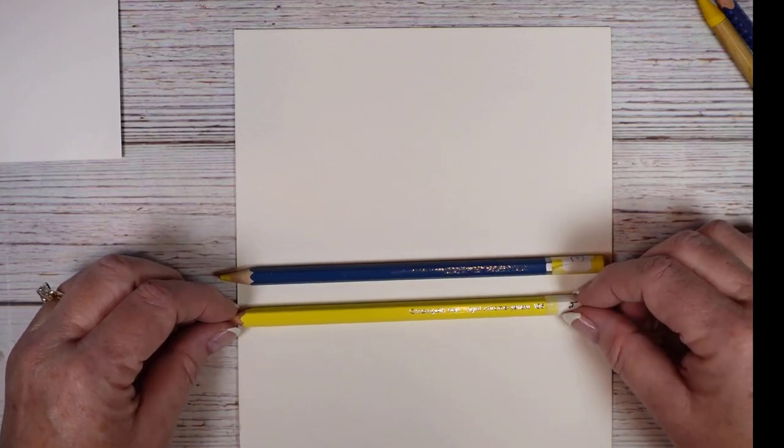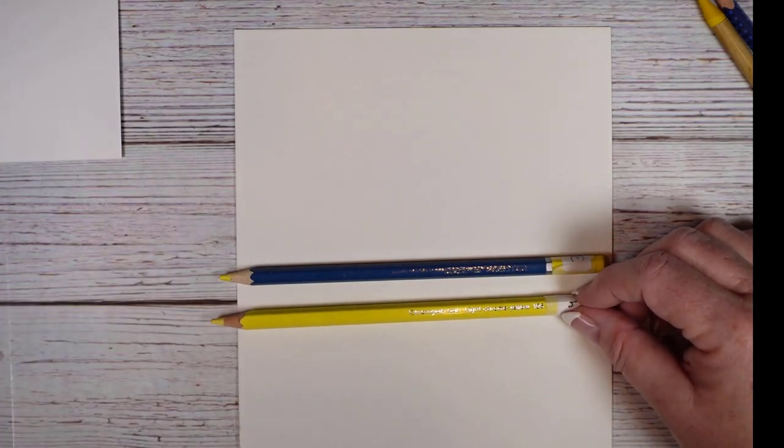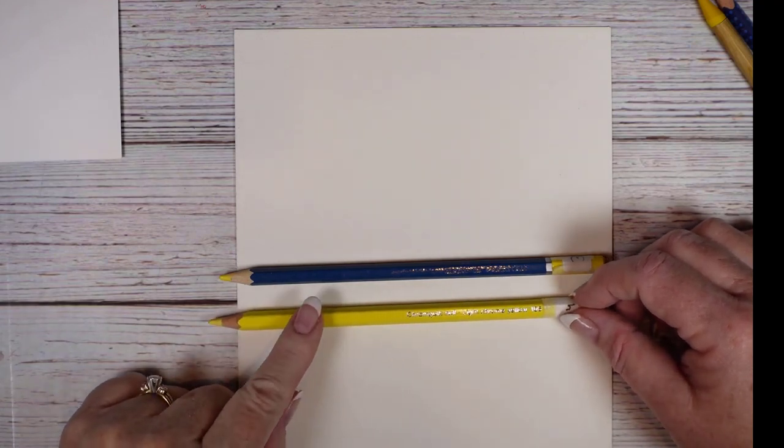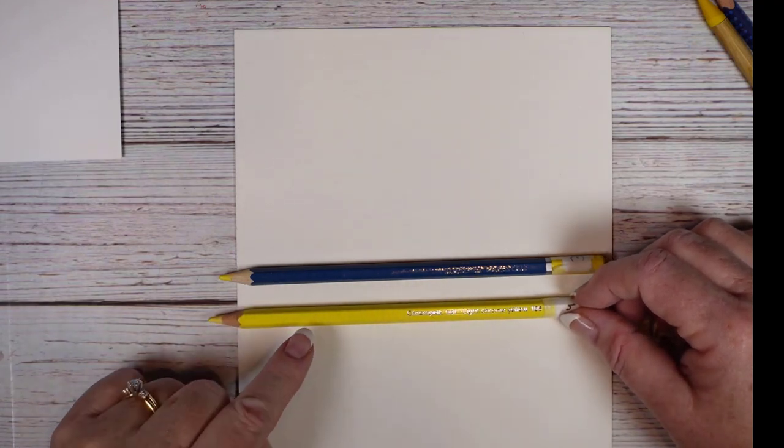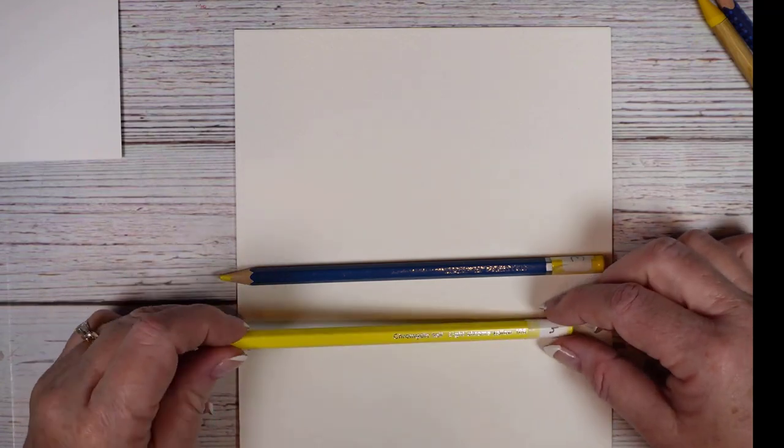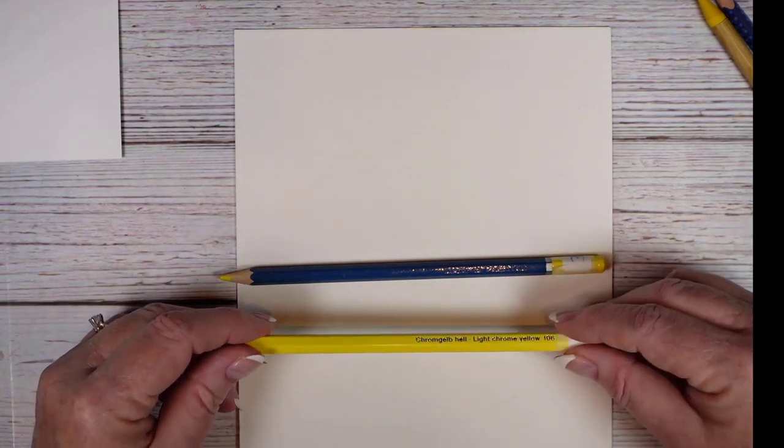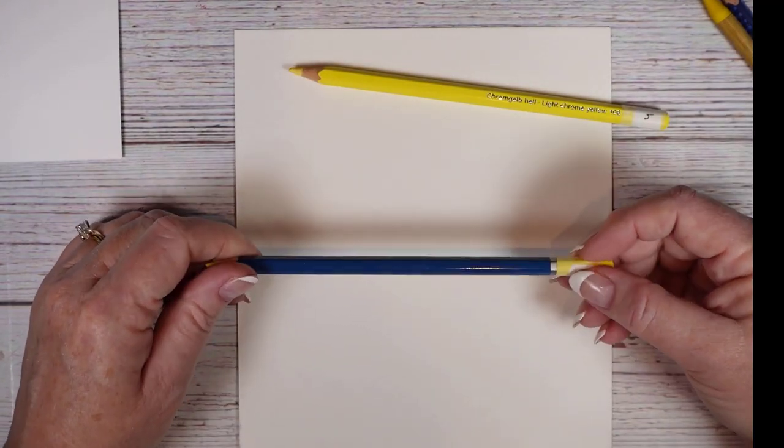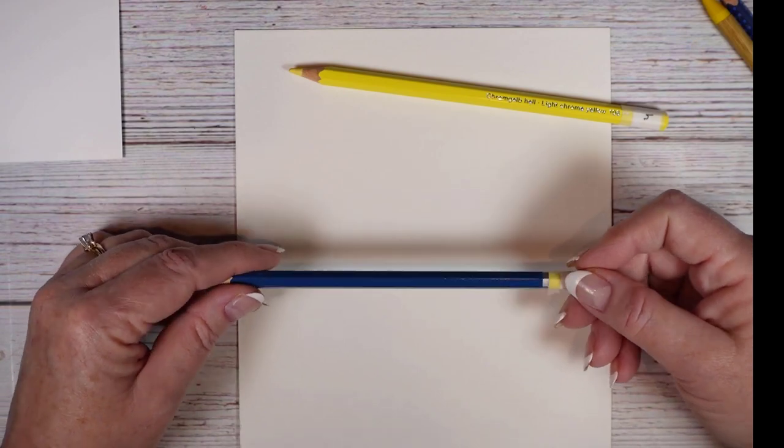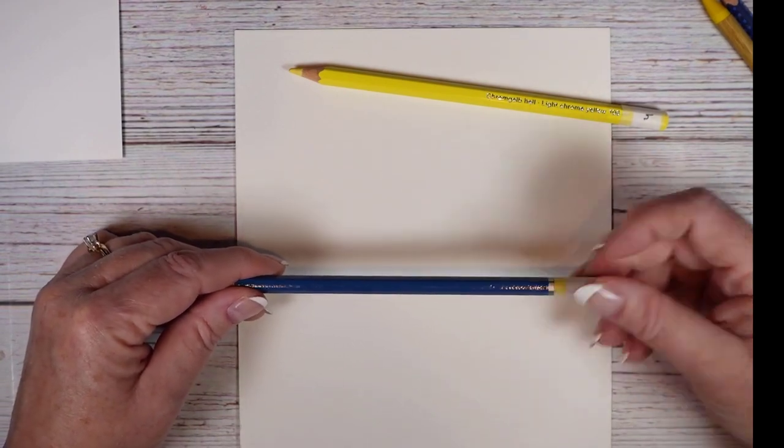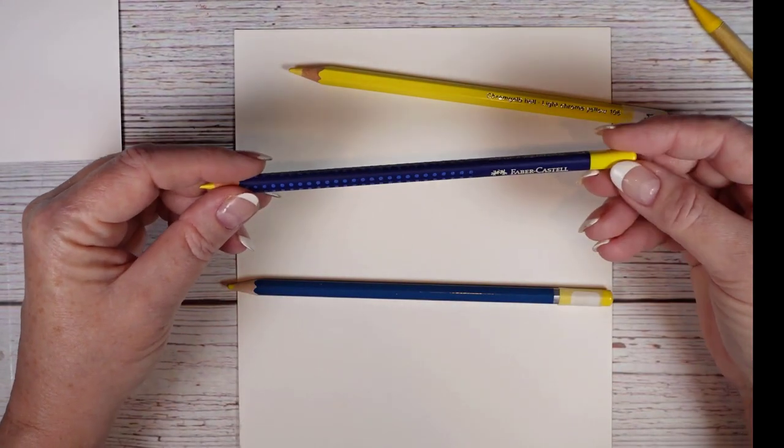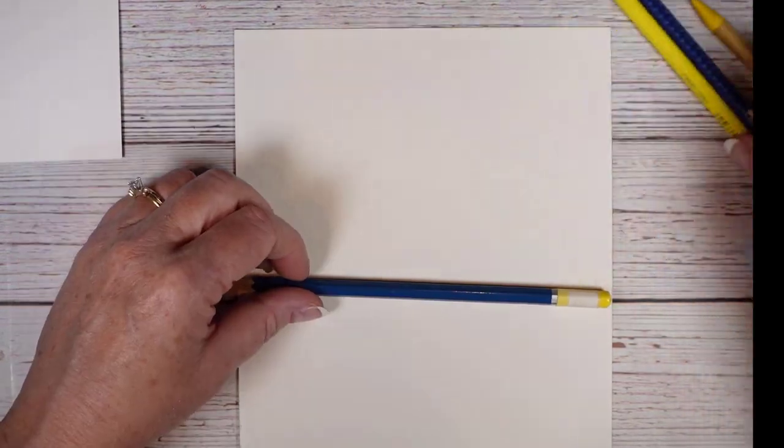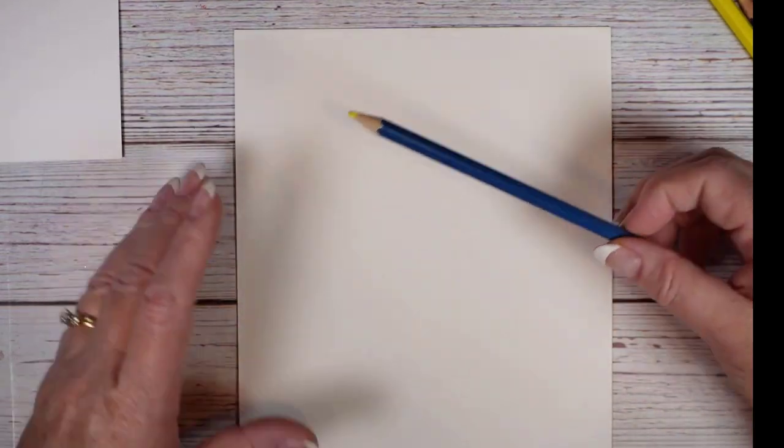The Albrecht Duers run $31 for 24 pencils, so that's $1.30 a pencil. This unknown brand is $3 for 24 pencils, so these are $0.13. The Tim Holtz ones run $22, so they're $0.90 a pencil. Just to give you a little heads up.